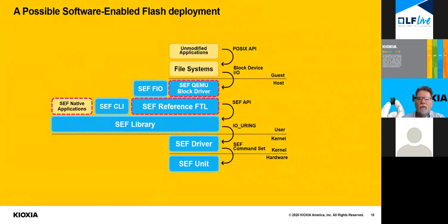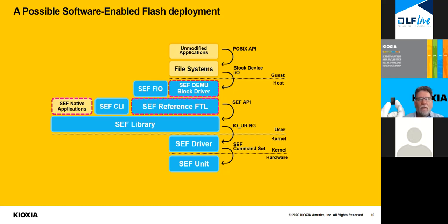For a system-level view of one possible deployment: items outlined with red dashed lines would likely be customized for different environments. At the very top, unmodified applications run within a virtualized guest using the POSIX API to talk to a file system, and file systems use block-device I/O to talk to devices. Since these are virtualized guest environments, they're talking to a hypervisor within the kernel. In this case, a software-enabled flash QEMU block-device driver interfaces with the reference flash translation layer and the software-enabled flash library to bring block-level features and functionality to virtualized guests.